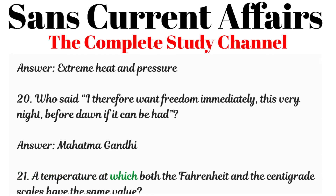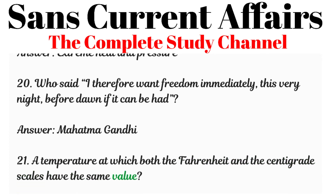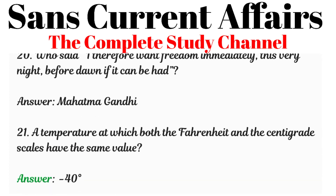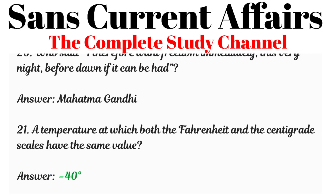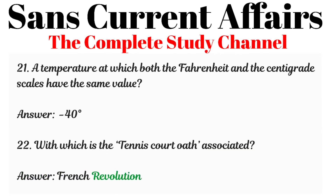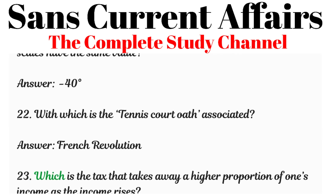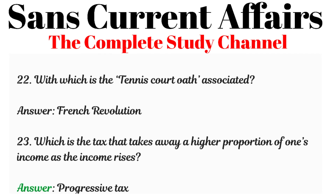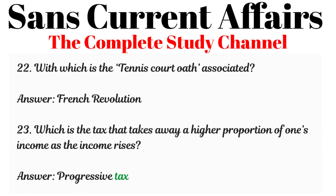Question 21: At which temperature do both the Fahrenheit and Centigrade scales have the same value? Answered: Minus 40 degrees. Question 22: With which event is the Tennis Court Oath associated? Answered: French Revolution. Question 23: Which is the tax that takes away a higher proportion of one's income as income rises? Answered: Progressive tax.